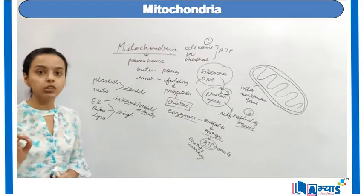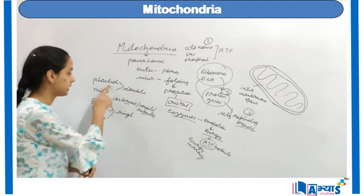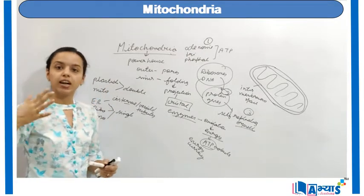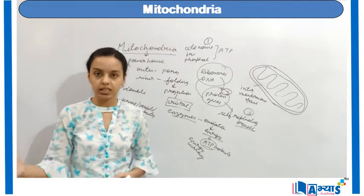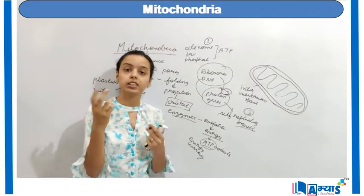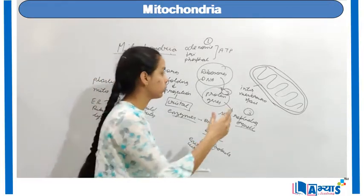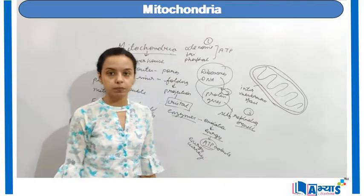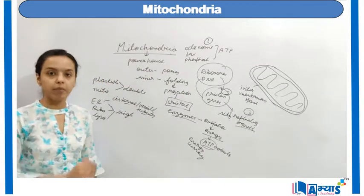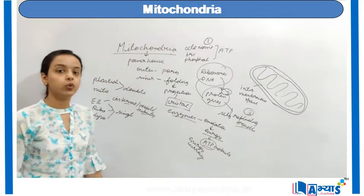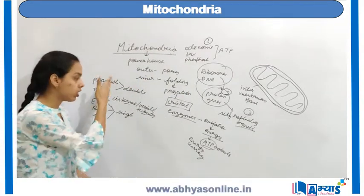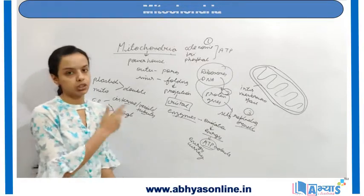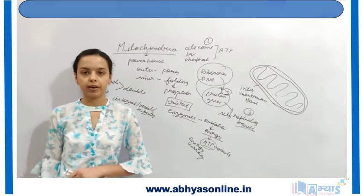Remember, only two organelles — plastids and mitochondria — are double-layered; the rest are single-layered. The space between the two membranes is known as the intermembranous space. This was the concept of mitochondria; you can refer to all other organelles in separate videos.